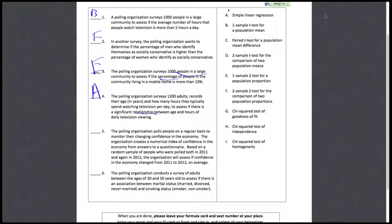Number five says the polling organization polls people on a regular basis to monitor changing confidence in the economy. There's a numerical index based on random sample of people who are polled both in 2011 and again in 2012. They're the same people, so we have a paired sample.